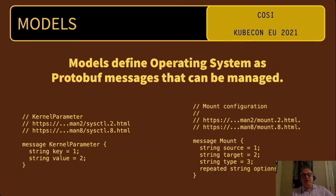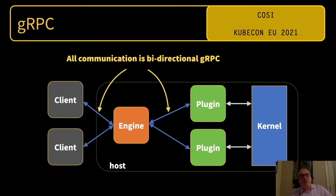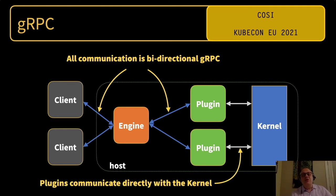Models in Cozy are protobuf messages, and these map very closely to Linux and other Unix settings. Cozy defines a series of RPCs inspired by and very similar to Kubernetes RPCs — you can list, get, create, and watch resources. Cozy tends to be a declarative system: you set the desired state for a resource, and the Cozy plugins work to get the system into that state. For communication, Cozy uses bi-directional gRPC. We investigated other internal IPC systems for Linux, but for simplicity we are starting with gRPC. Plugins are designed to be as close to the underlying OS as possible — Cozy is not a configuration management system. We don't want to wrap commands and parse shell output; the expectation is that a Cozy plugin will be as low-level as possible, talking to the kernel or low-level APIs.